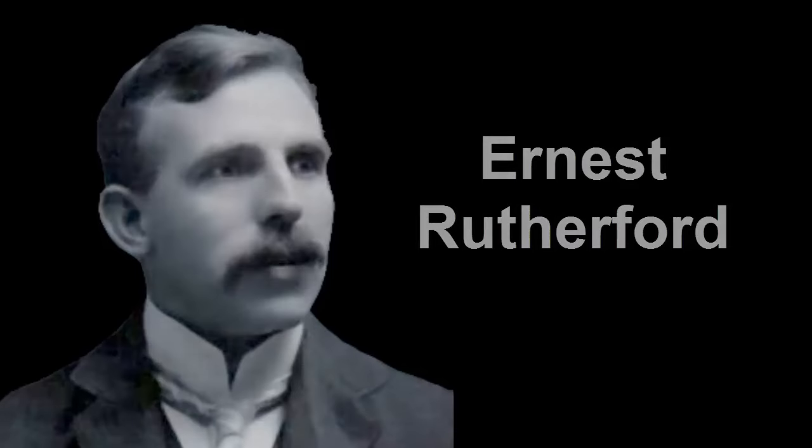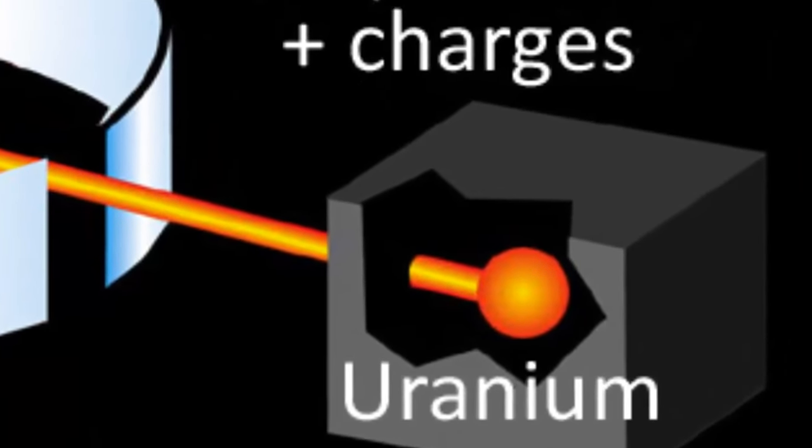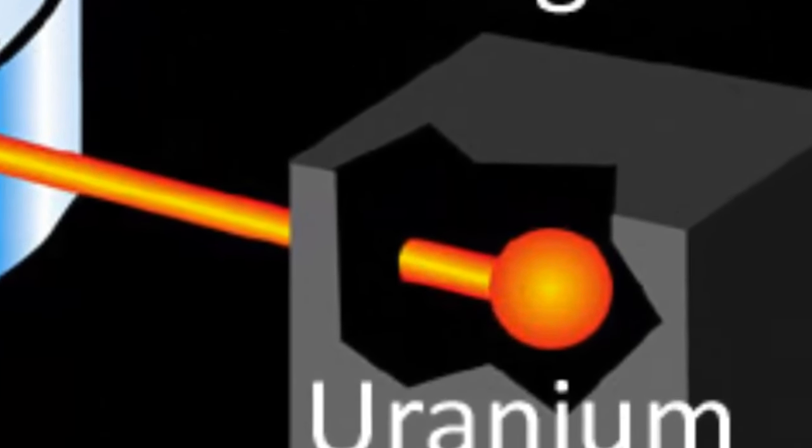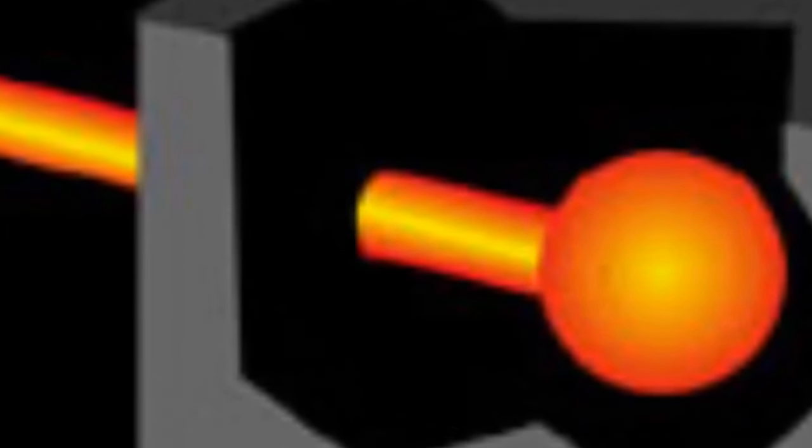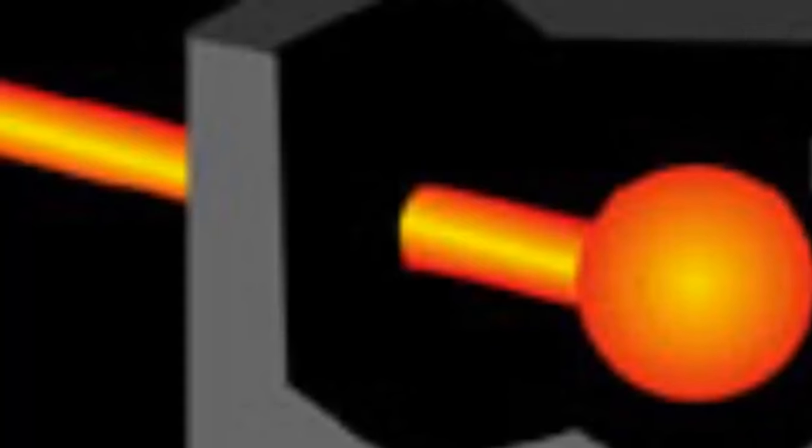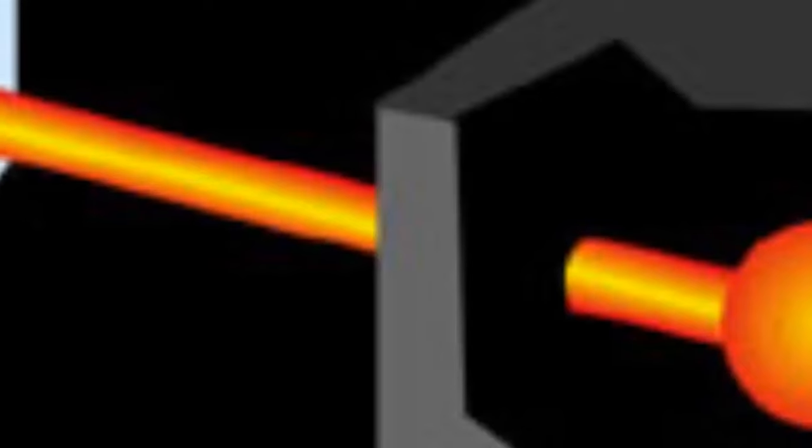Rutherford was playing around with beams of positively charged particles, which he called alpha particles, that were emitted from uranium atoms. He knew they were positively charged, because they bent in the opposite direction to the electrons of a cathode ray when passed through charged parallel plates. They bent more slowly than electrons, so he knew they were heavier than electrons too.